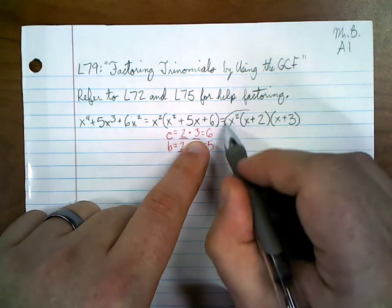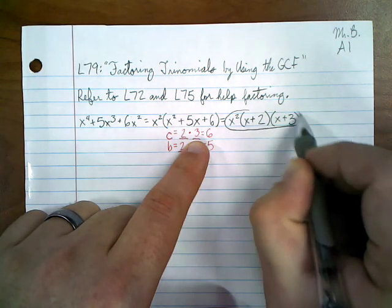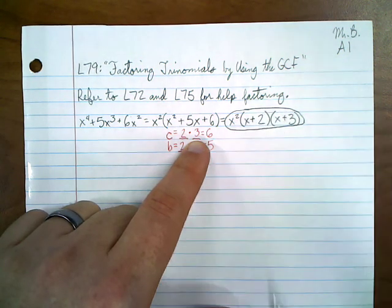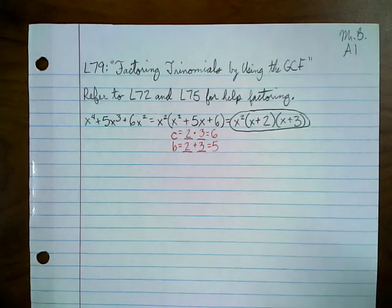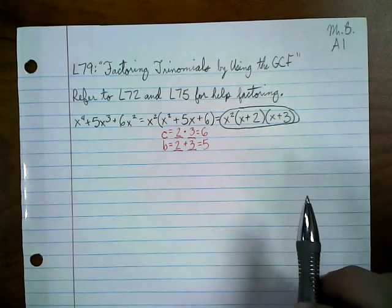So we can factor this further as x squared times the quantity (x plus 2) times the quantity (x plus 3). And that is the polynomial completely factored.